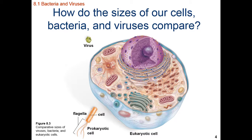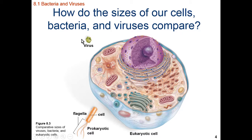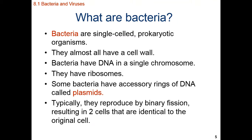Now, if we look at the size of our typical human cell — this is a generic or typical eukaryotic cell — it's going to be quite large compared to a bacterial or prokaryotic cell. And a virus is even smaller. A virus is typically only going to be the size of an organelle within a typical eukaryotic cell. So these viruses are quite tiny in nature.